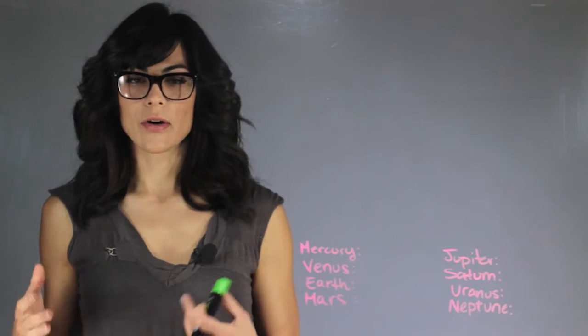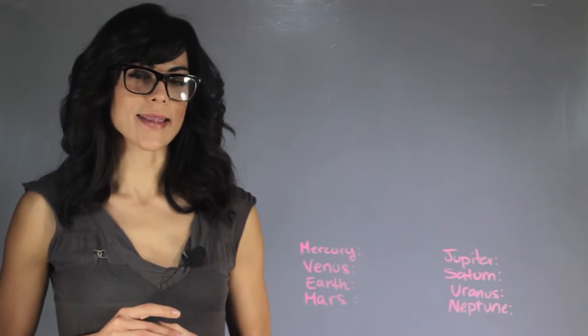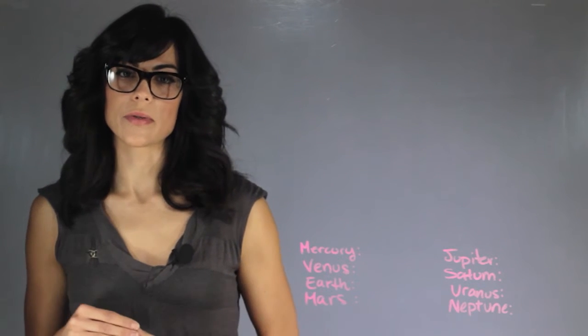So generally when we read or when we Google the speed of the planets, they give it to us in meters per second, and that's because generally in physics we use SI units.